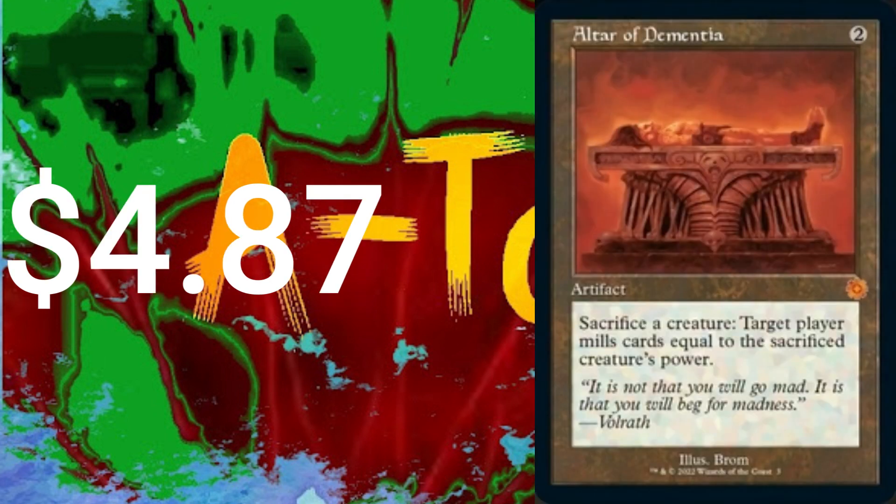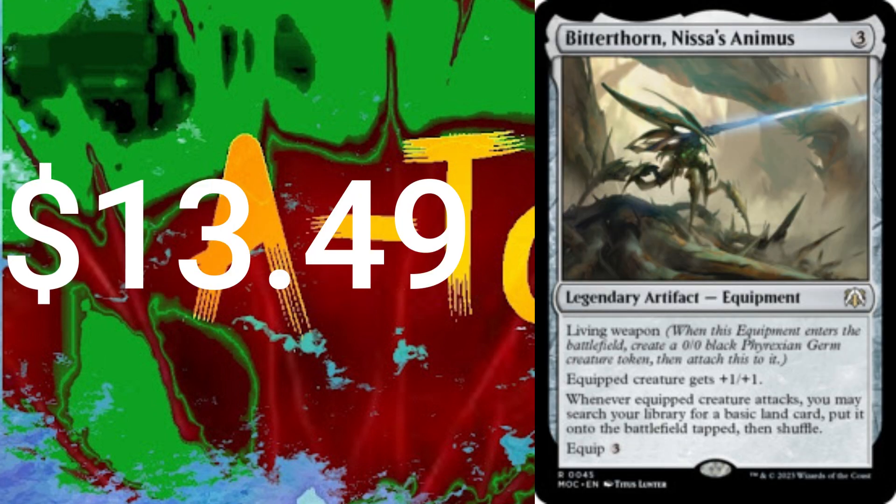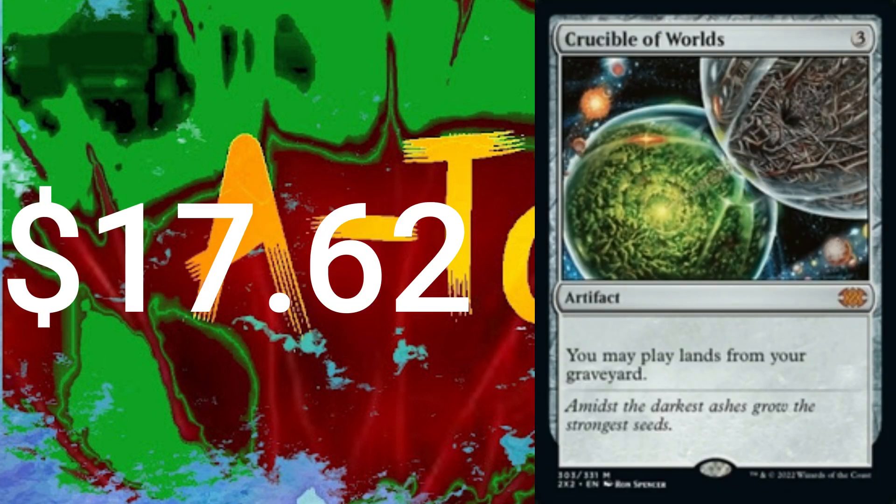Now for the 13 artifacts. Sol Ring, Altar of Dementia because we gotta mill our opponents, Arcane Signet, Lightning Greaves, Marble Diamond, Pearl Medallion, Swiftfoot Boots, Bitterblossom, Nissa's Ascendancy, Crucible of Worlds, Sword of Light and Shadow.